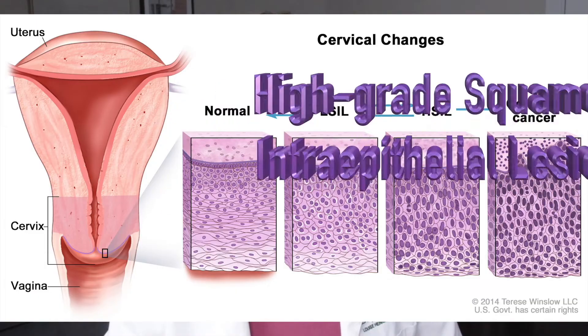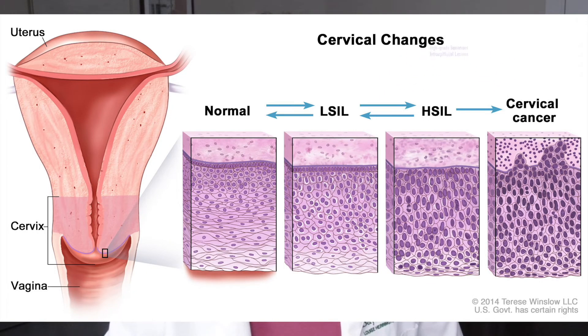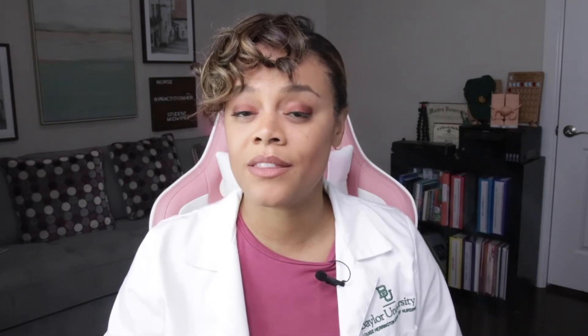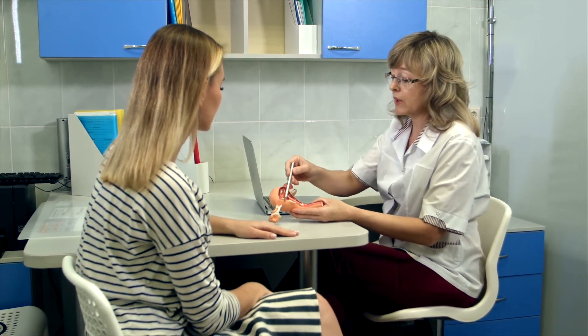Another abnormal pap smear result is HSIL. As previously mentioned in ASC-H, HSIL stands for high-grade squamous intraepithelial lesion. These abnormal cells are often referred to as high-grade squamous intraepithelial lesions. If untreated, these cells could become cancerous in the future, and it is very likely that your practitioner will order a colposcopy. I will talk more about colposcopies at the end of this video.